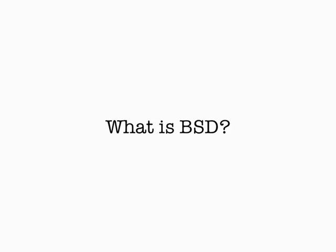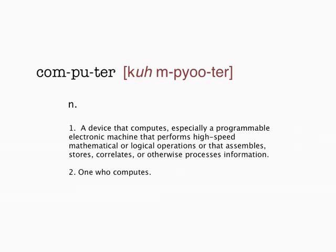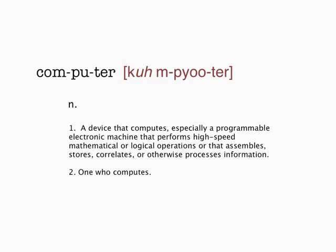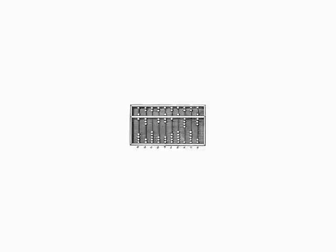So again — what is BSD, what is Unix, what is an operating system, what is a computer? A computer is a device that computes, especially a programmable electronic machine that performs high-speed mathematical and electrical operations, stores, correlates, or otherwise processes information. This is a computer. This is also known as a computer. This is a really big computer. This is a fake big computer. And sometimes this can compute.